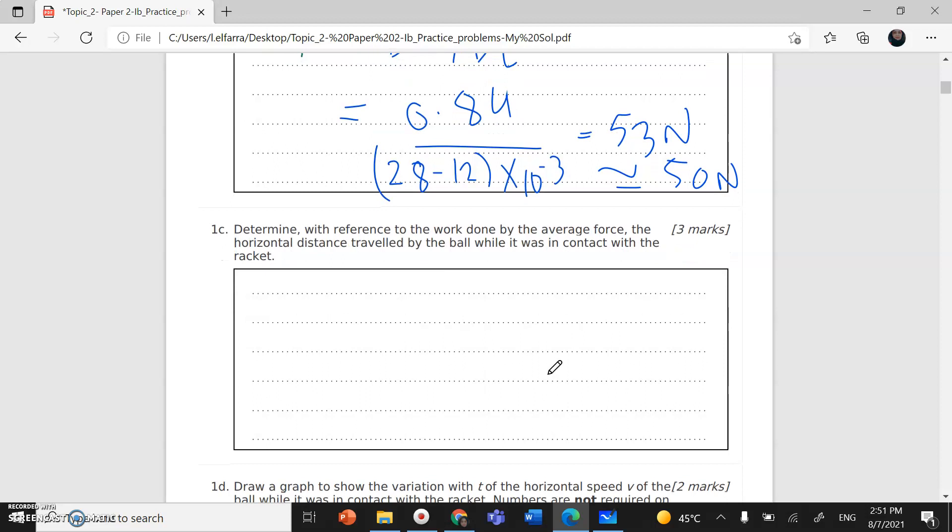Part C: Determine, with reference to the work done by the average force, the horizontal distance traveled by the ball while it was in contact with the racket. So I need the horizontal distance.